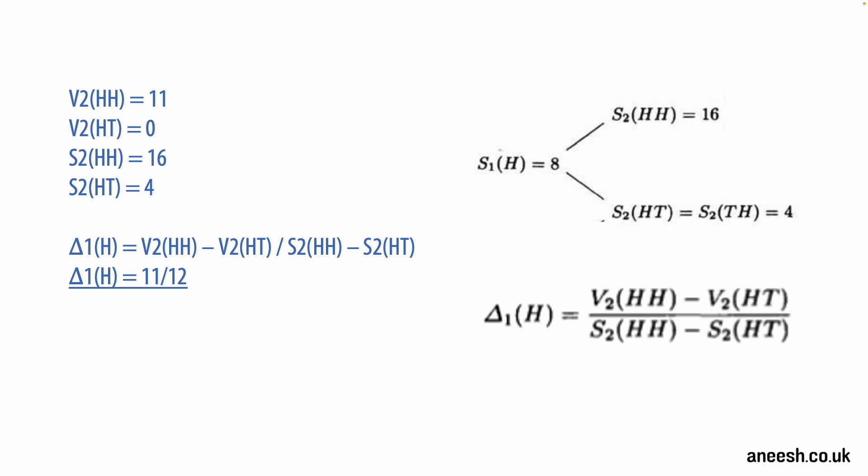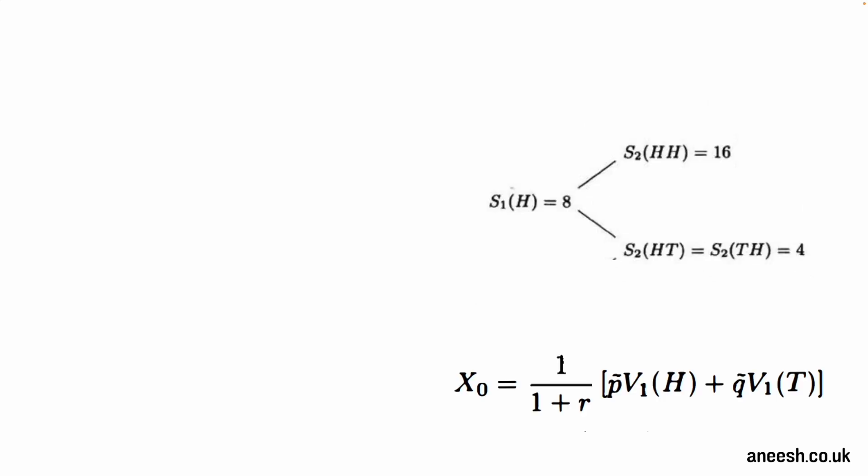To obtain the fair value of the option in the market given the first coin flip as heads, we can calculate X1(H). The value of X1(H) is given as the present value for the expectation of the option at time 2. So we can calculate X1(H) by taking the expected value at time 2 of the portfolio, which is V2(HH) multiplied by P and V2(HT) multiplied by Q. And then what we want to do is multiply that by the interest rate for one period, and that's 1 over 1.25. So V2(HH) is 11 and V2(HT) is 0 as we mentioned earlier. And then if we multiply this by 1 over 1.25 that will leave us with 4.4.